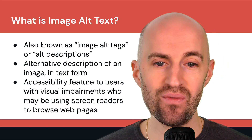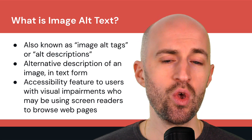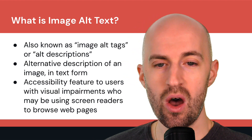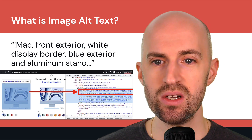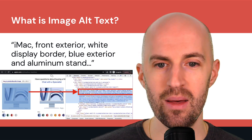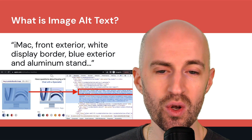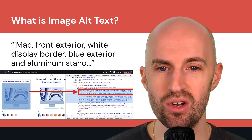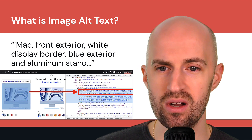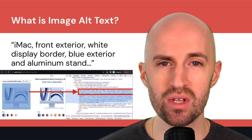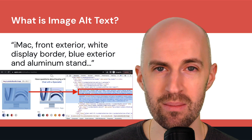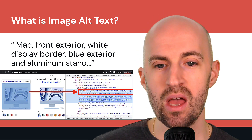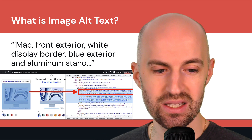It's an accessibility feature for users with visual impairments who may be using screen readers to browse web pages, because they might not be able to read the screen. Here's an example from Apple — I highlighted one of the images, and if you look at the code, the alt text is: 'iMac front exterior, white display border, blue exterior and aluminum stand.' If you were to visualize that, you could pretty much picture what that image is about without looking at it. That's the whole purpose of image alt text.